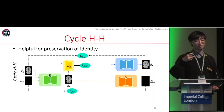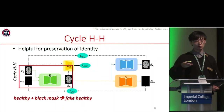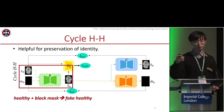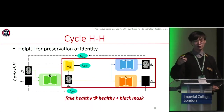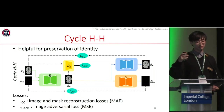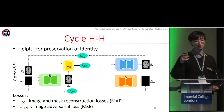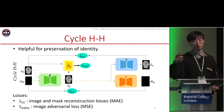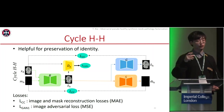Cycle H2H is designed to preserve identity. We start from a healthy image and a black mask, get a fake healthy one, and then reconstruct. We have LCC for the image and mask reconstruction losses between the input and the reconstructed output, and LGAN1 to make sure the fake healthy images look healthy and realistic.